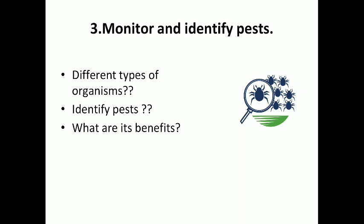The third step is to monitor and identify pest. There are many organisms or pests — some are useful while some are harmful. Pest identification should be done properly to take appropriate control measures. Proper identification reduces the chances of applying the wrong pesticide or applying it at the wrong time, which causes loss of time and money.